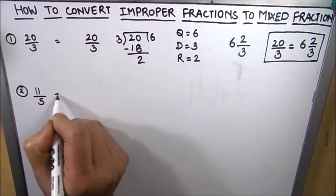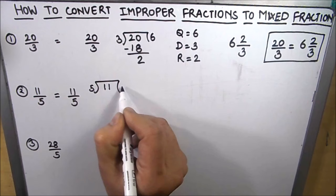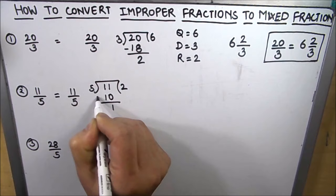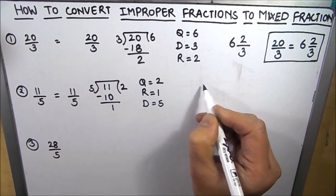Now let's try and write the mixed fraction for 11 over 5. So we are going to divide 11 by 5 and we are going to get the quotient as 2 because 5 times 2 is 10 and remainder as 1. So here quotient is 2, remainder is 1, and divisor is 5.